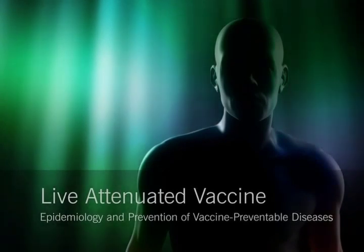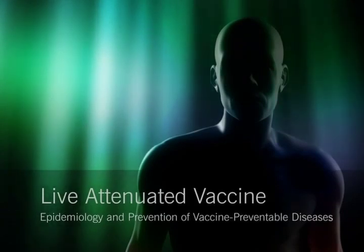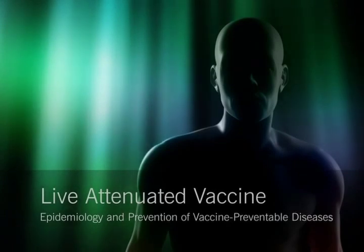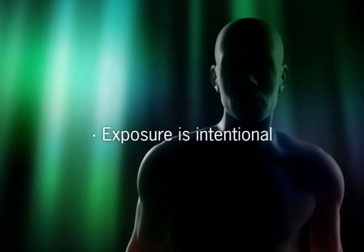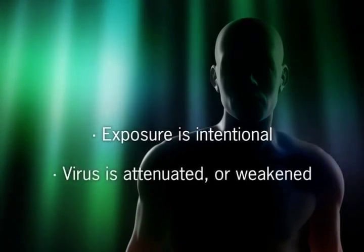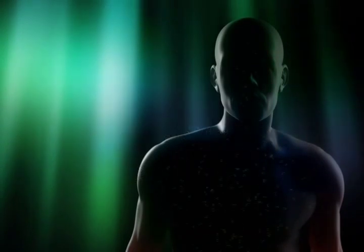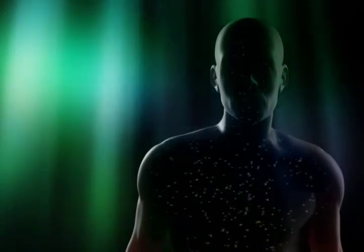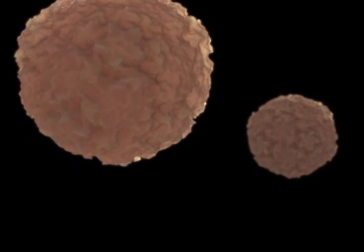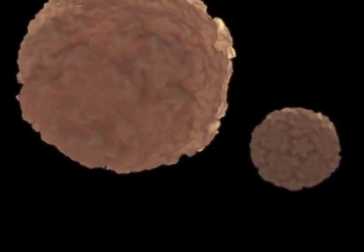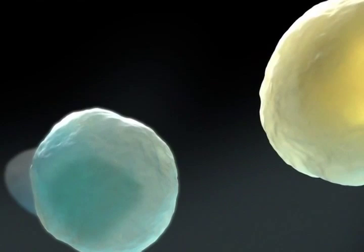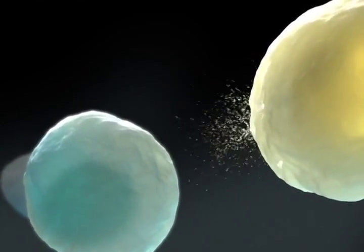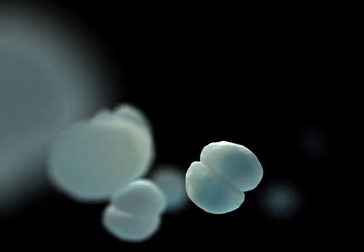The events that produce immunity with a live attenuated vaccine are almost identical to those which lead to immunity following infection with the disease-causing form of the organism. The two main differences are that exposure is intentional—usually through injection of the virus—and that the virus is attenuated or weakened, so it does not cause illness. Since the person is not immune, the vaccine virus is able to replicate and spreads throughout the body. The vaccine virus is very similar to natural disease virus, so the immune system cannot tell them apart. B cells and other antigen-presenting cells engulf and disassemble the virus, and present viral antigens on their surface. The viral antigens are recognized by a T cell.